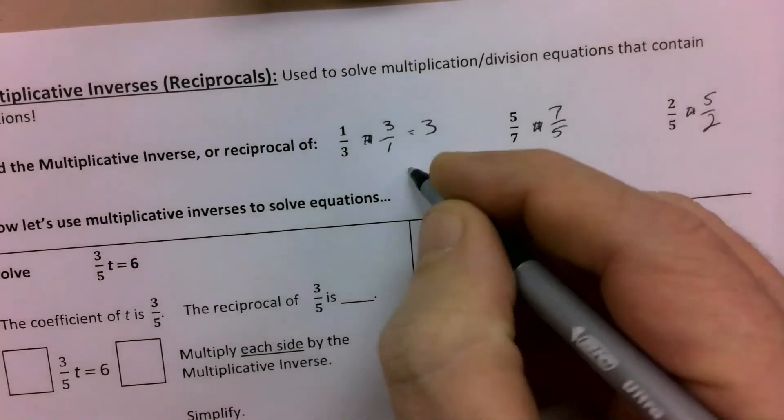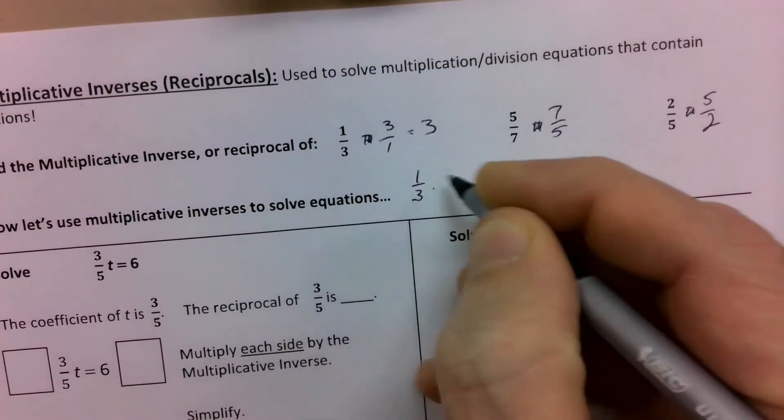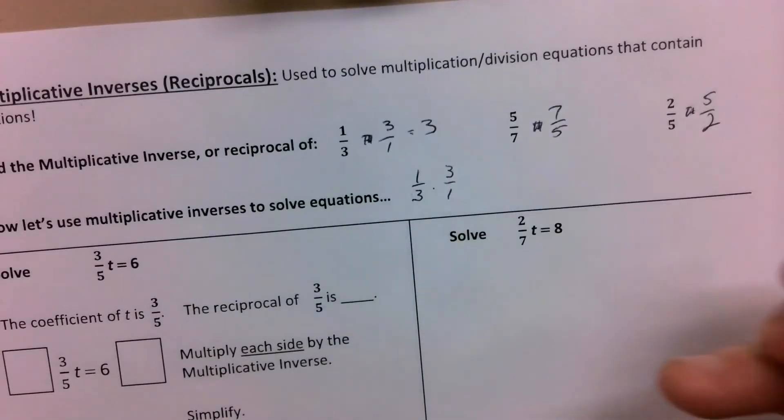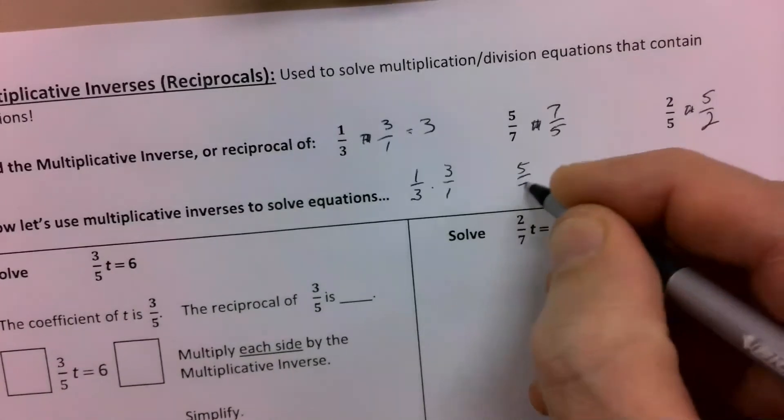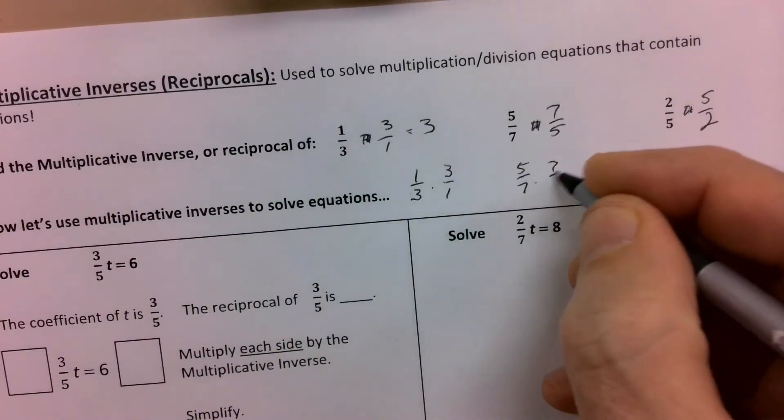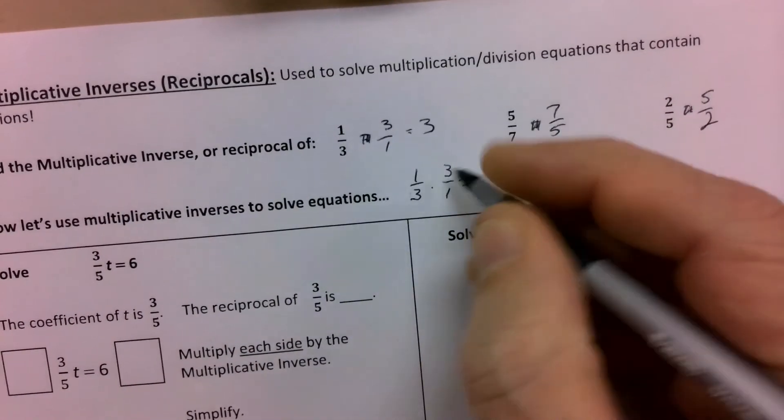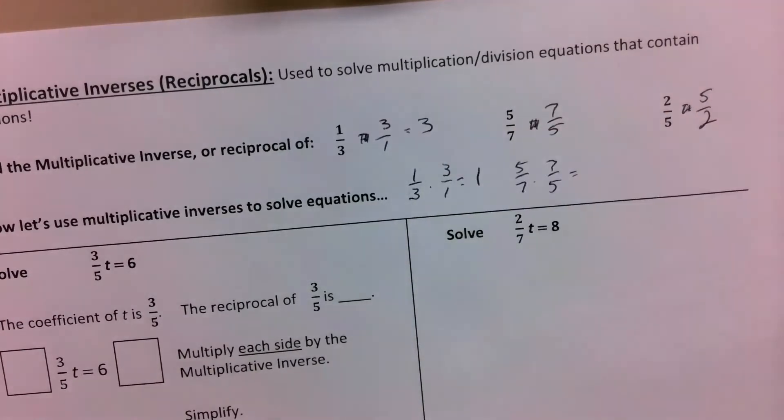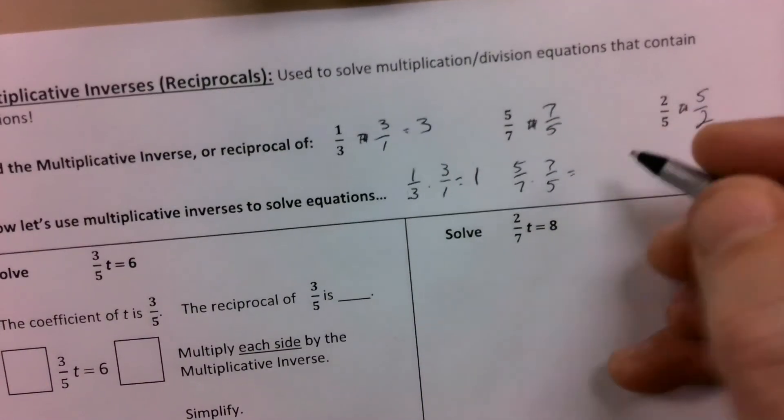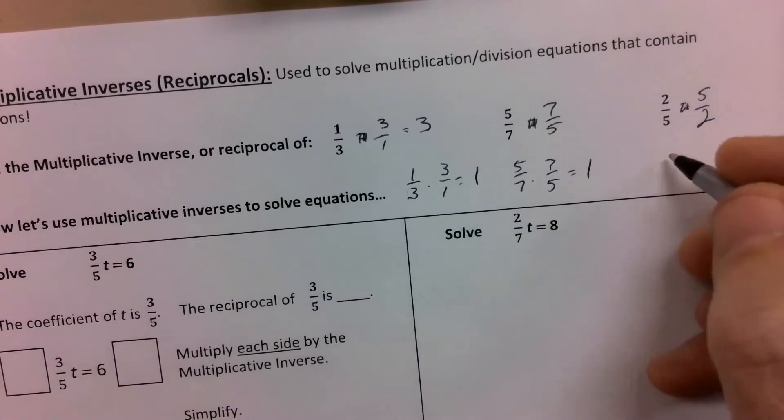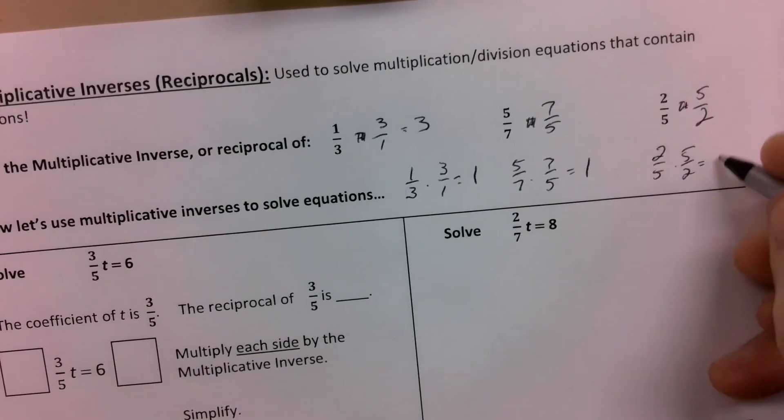Because if you take one third times three over one, or if you take five sevenths times seven over five, what you find is that is equal to three over three, which is one. That is equal to thirty five over thirty five, which is one. And two fifths over five halves is equal to ten over ten, which is one.